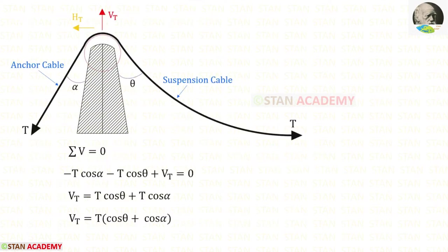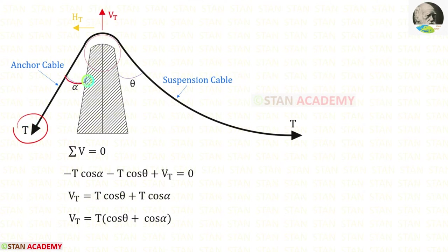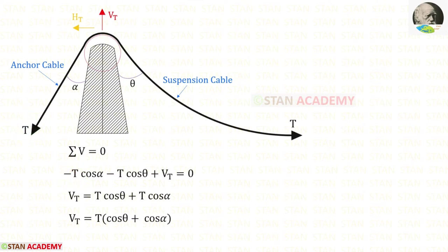Now let us apply the rule sigma V equals zero and find Vt. We have to resolve this force in the vertical direction. Here the angle is alpha, so when we resolve it in the vertical direction we will get T cos alpha. Since it is acting downwards it will be negative. In the similar way we have to resolve this force in the vertical direction. Here the angle is theta, so when we resolve in the vertical direction we will get T cos theta. Since it is acting downwards it should be negative.